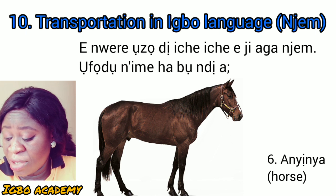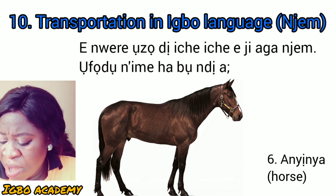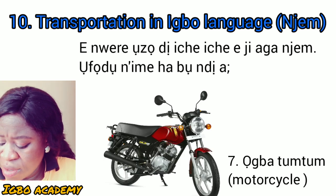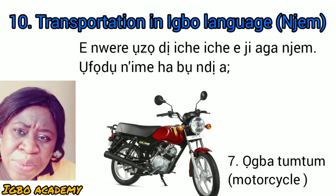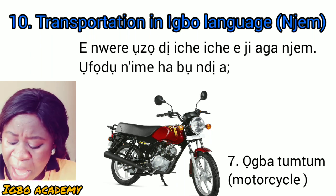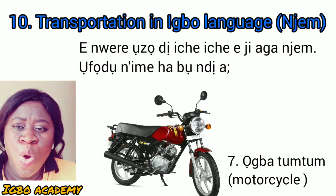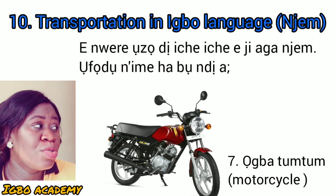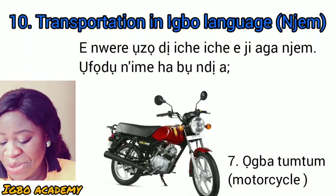So that is a means of transportation in Igbo language. Then we have number seven — the motorcycle. The motorcycle is called Obatutu.